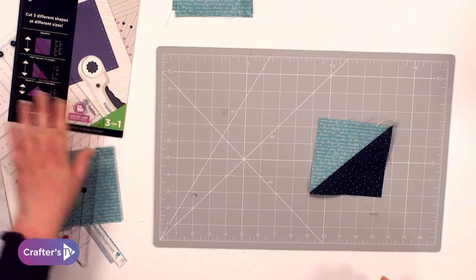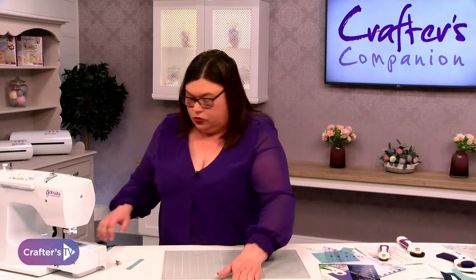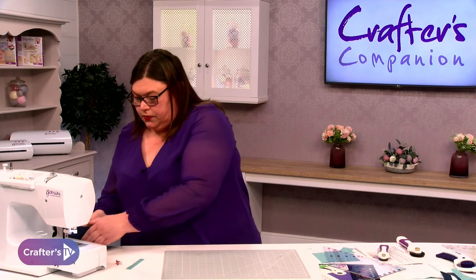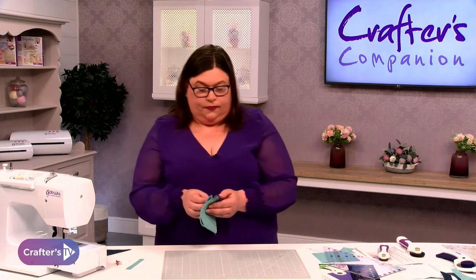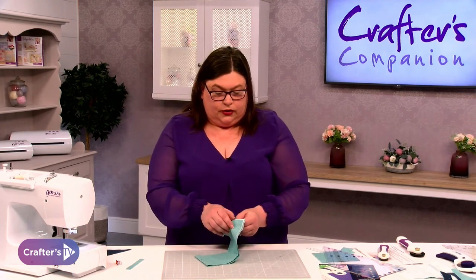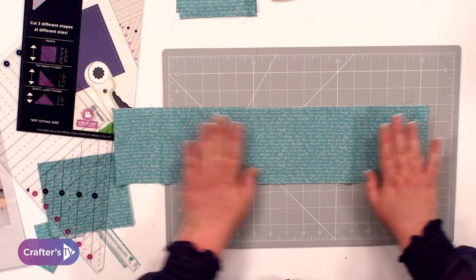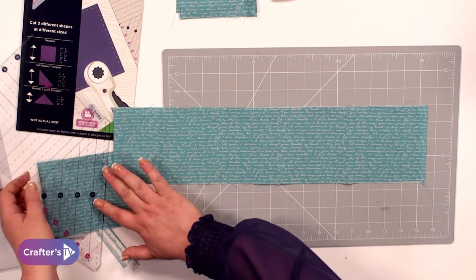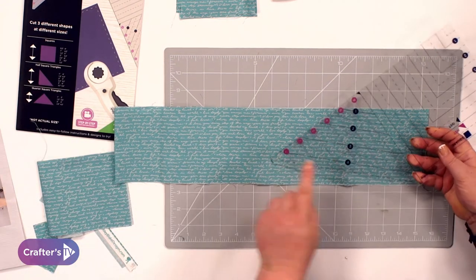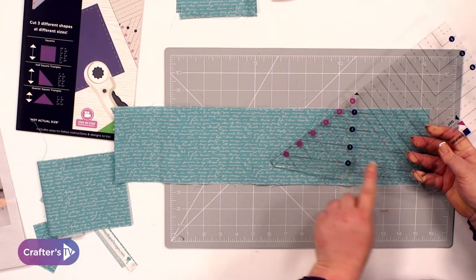So the other one that we've got to do is the quarter square triangle. So if I get my strip of fabric. So I've got my strip of fabric again here. Again, I'm going to cut two layers with this one and I've cut this at four and a half inches. So this time we're looking at this side here, which is in the blue.